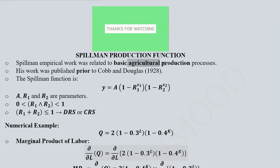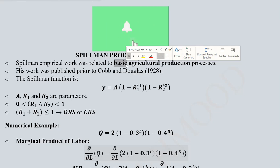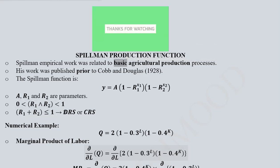And it makes sense because we are dealing with agricultural production processes in their basic form or in their more raw form. So increasing returns to scale was unlikely in that case.